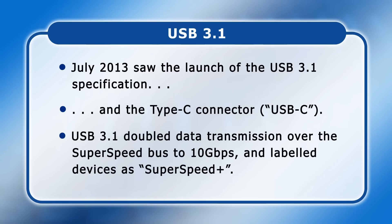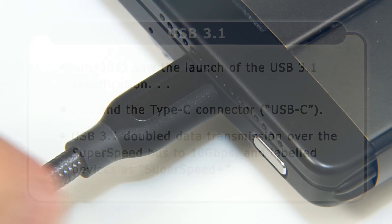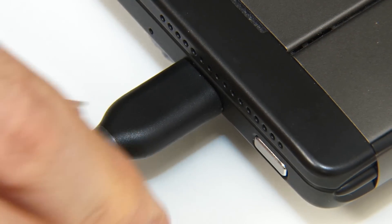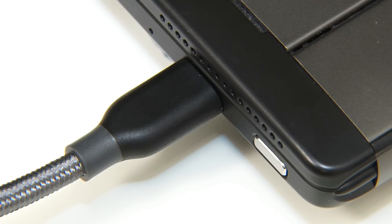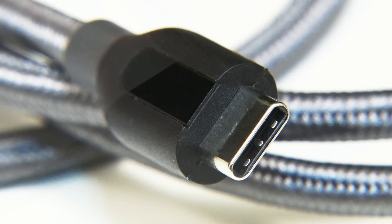The USB 3.1 specification doubled data transmission speeds over the SuperSpeed bus to 10 gigabits per second and labeled devices as SuperSpeed Plus. The Type C connector provided the apparent advantage of being able to be inserted either way around. However, confusion was also introduced as some users came to believe that only a USB-C connector can operate at USB 3.1 data speeds, which is not true.